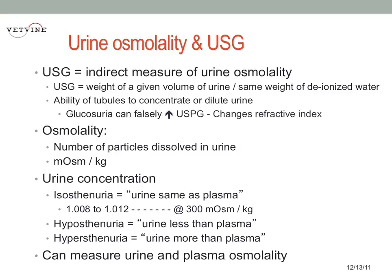These terms mean the specific gravity is compared to what the specific gravity would be of plasma. Plasma typically has an osmolality of 300 milliosmoles per kilogram, which equates to a specific gravity of around 1.010 — somewhere between 1.008 and 1.012, give or take. This is called isosthenuria, meaning the osmolality and specific gravity of the urine is the same as plasma.